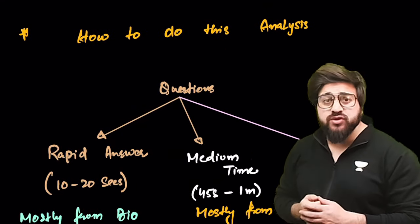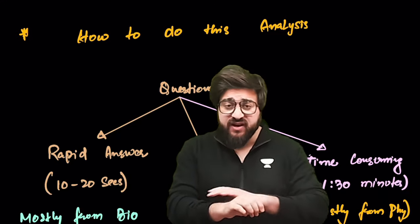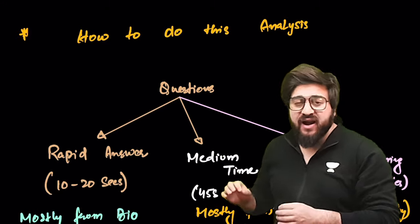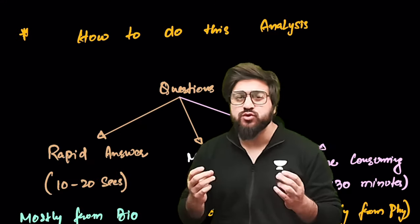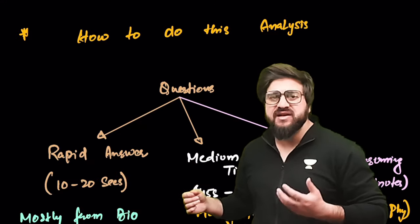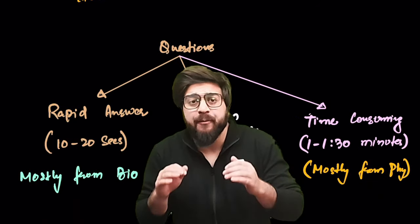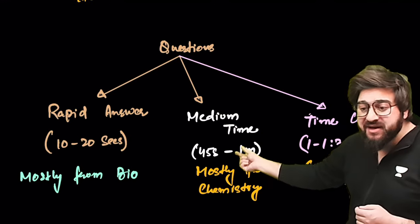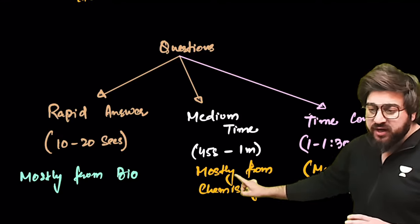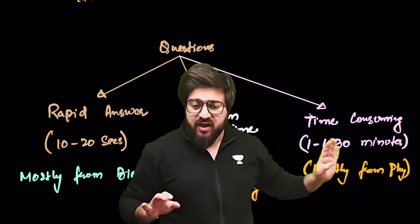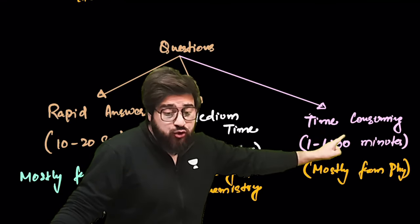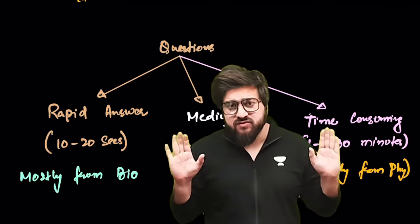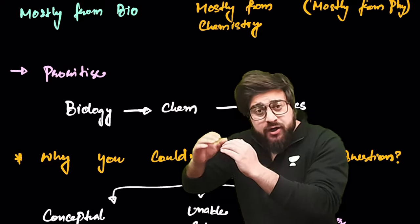Now, how do you do this analysis? Let's first talk about the types of questions asked in NEET. First are rapid questions — quick answers taking 10 to 20 seconds or less, mostly from biology. Second are medium-time questions taking 45 seconds to one minute, mostly from chemistry and some biology. Third are time-consuming questions taking 1 to 1.5 minutes, mostly from physics.